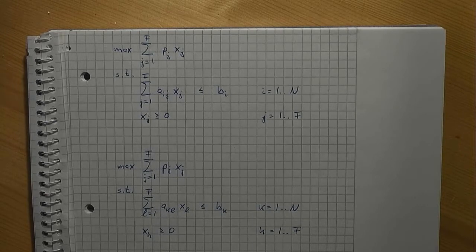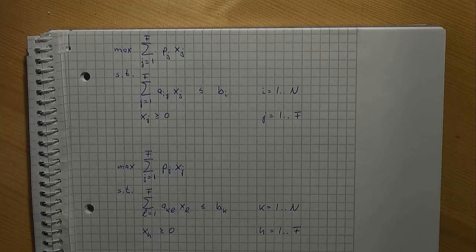Both models are correct and, besides naming of the indices, they are completely identical. How can we convince ourselves that both models are identical? Well, we could write out what is meant. For the sake of brevity, let's do it with the constraints only.